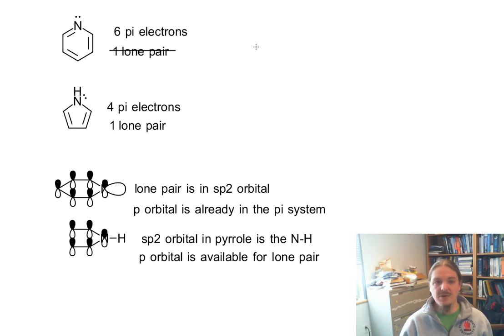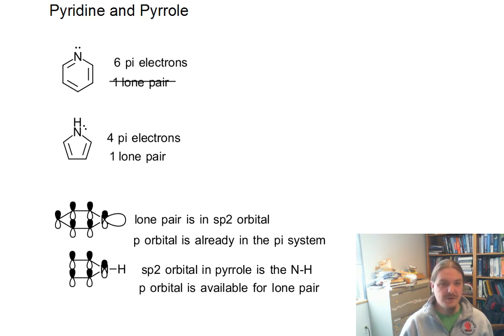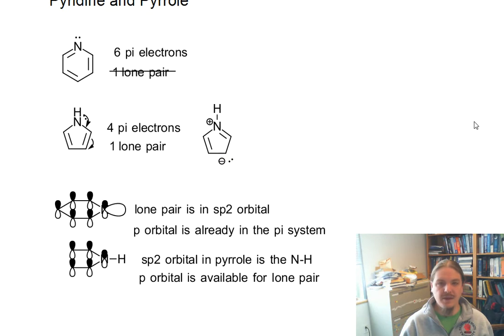And so the p-orbital is available. If you are looking at it from a resonance standpoint, then it looks like we have in pyrrole a lone pair that can be distributed by resonance. The definition of delocalized.